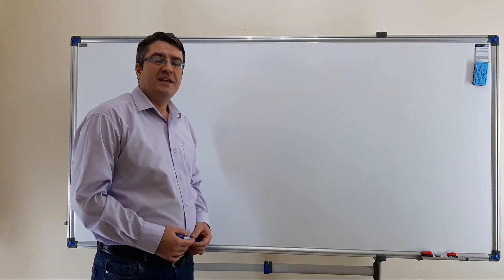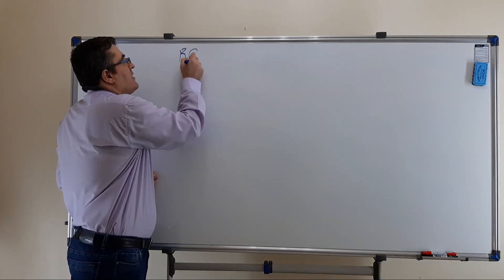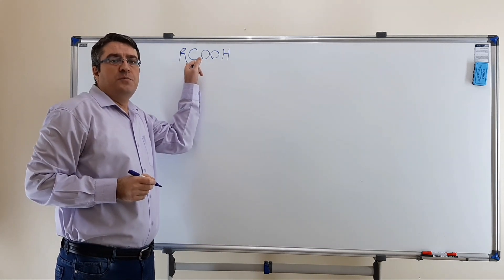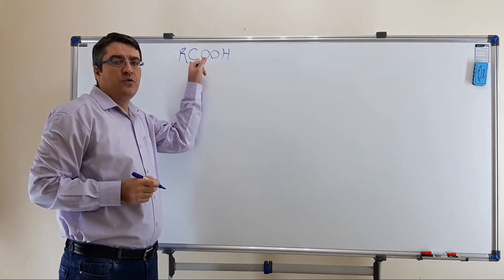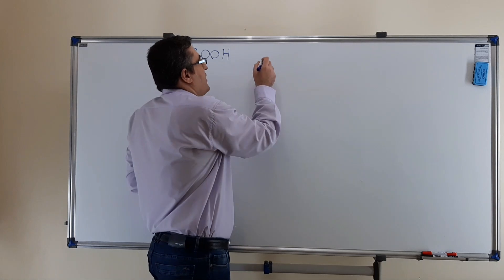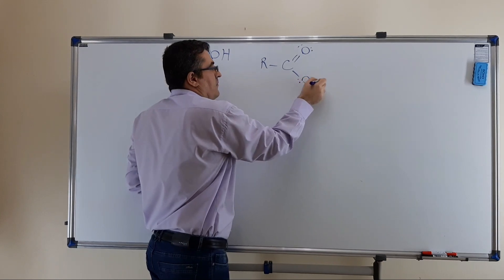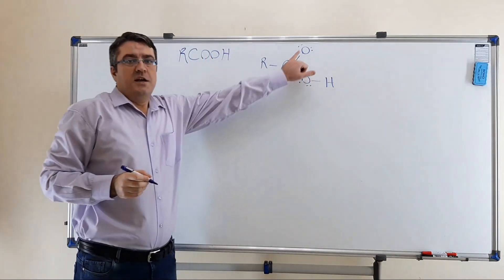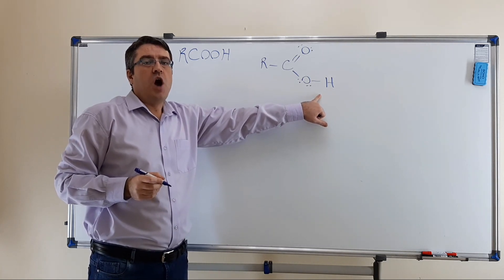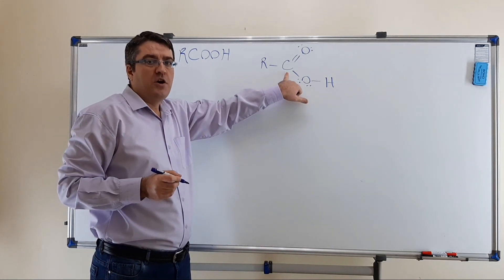In general, carboxylic acids can be represented as R-COOH, where R is an organic group such as an alkyl group. It can also be hydrogen. The COOH group, also called the carboxy or carboxyl group, is the characteristic functional group of carboxylic acids.